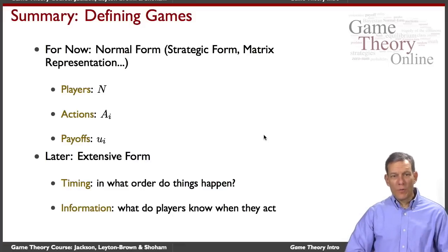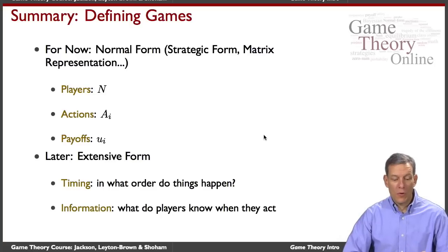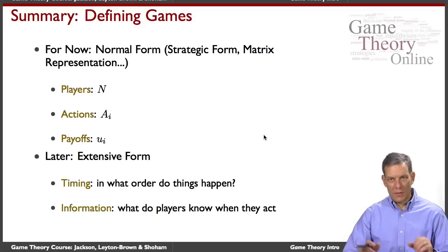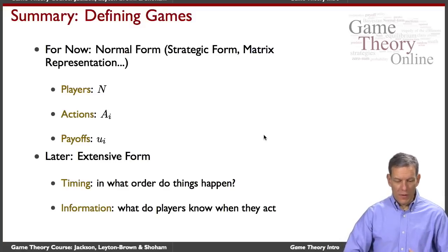In summary, in defining games we have two different forms: a normal form and an extensive form. For now we're starting with the normal form with critical ingredients: players, actions, and payoffs. Later when we get to the extensive form that's going to bring in timing, information, and so forth. Extra things that will account for more detailed representations of the strategic interaction by players.